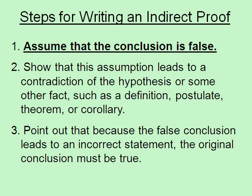Steps for writing proofs indirectly. Step 1: assume the conclusion is false — if there's a statement, you need to say the opposite of that. Step 2: show that this assumption leads to a contradiction of the hypothesis or some other fact, such as a definition, postulate, theorem, or corollary. Step 3: point out that because the false conclusion leads to an incorrect statement, the original conclusion must be true.